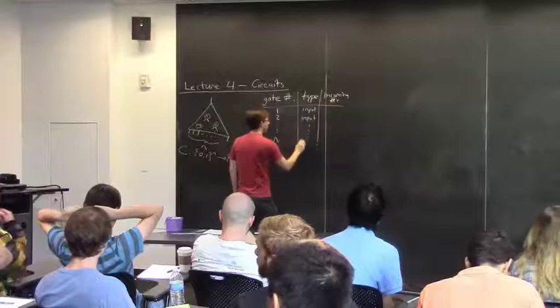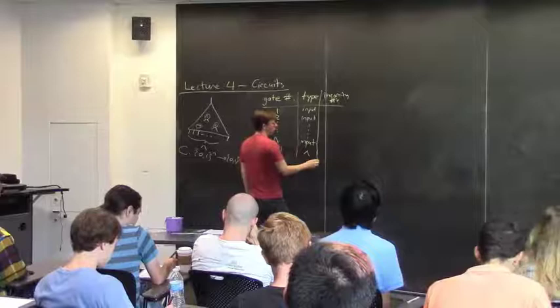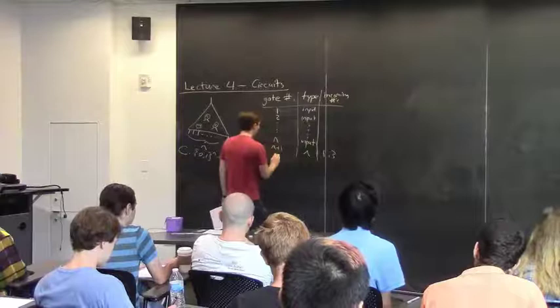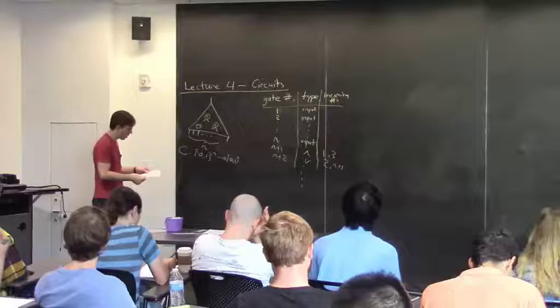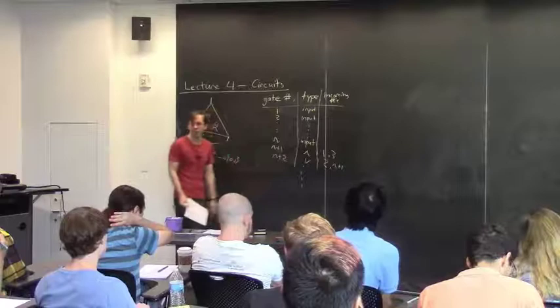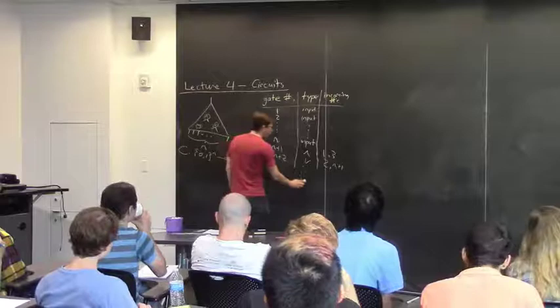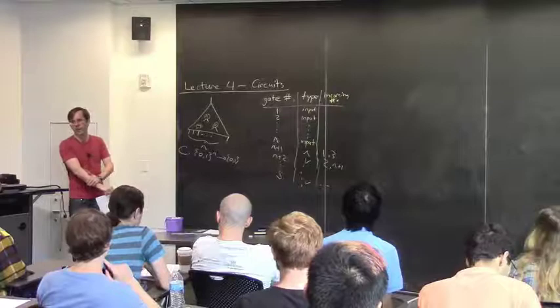After the input gates you get started with the real computation. Gate number N+1 is perhaps an AND gate, and you say for an AND gate what its two incoming wires are — so maybe 1 and 3. Gate N+2 is maybe an OR gate with inputs 2 and N+1, and so forth. This is supposed to be a directed acyclic graph, so you should only have incoming gates that are of a lower number than the gate you're specifying. We can assume the last gate is the output gate. The number of gates is referred to as the size of the circuit, S.